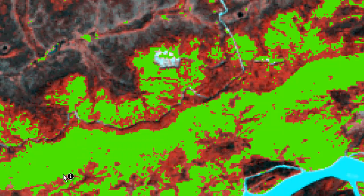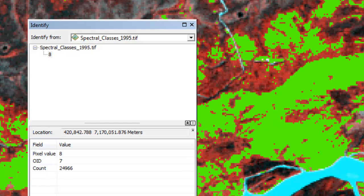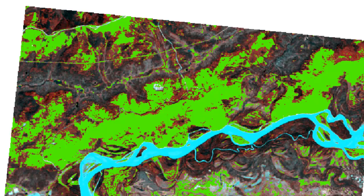We've got some remaining broadleaf pixels. Class 8 also — we'll color code class 8 to be green. So we've got all the aspen pixels and more, basically all the broadleaf forest pixels from 1995. We want to reclassify these to have a value of 1.